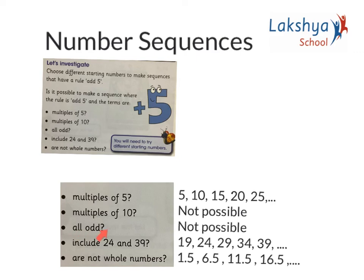All numbers: it is not possible because if you start with any number, say 1 plus 5, you get 6. So it is not possible to get all numbers. The next option says 'includes 24 and 39'. Here is a sequence formed with the plus 5 rule. We have the number 24 as well as 39. Not a whole number: here I have taken decimal numbers, so it does follow the rule of add 5.